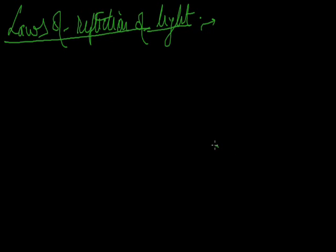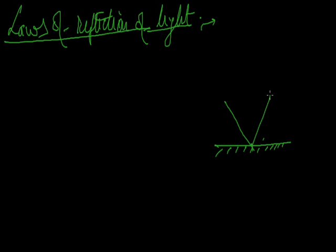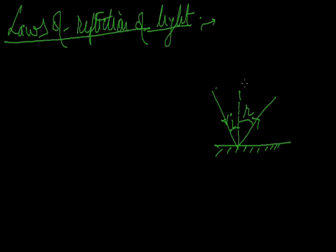Suppose this is a mirror and light falls on it — this is the incident ray. The point of incidence, this is the normal. The incident ray and the reflected ray — this angle is the angle of incidence, and this angle is the angle of reflection. This is the normal, and this is the reflected ray.